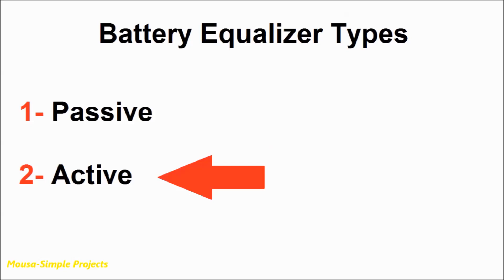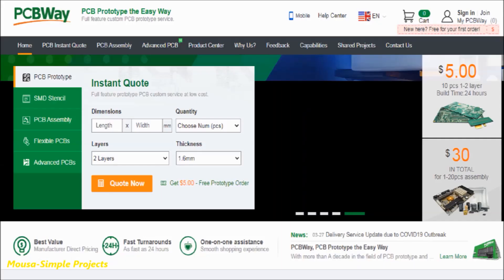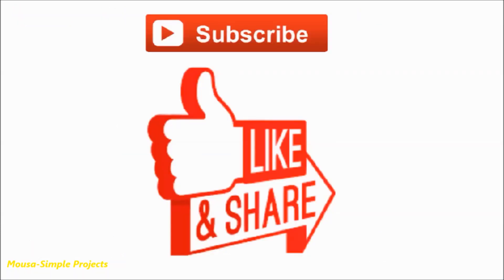The active type battery equalizer has higher efficiency; maybe I can make it for another video. I did some changes on this PCB and you can order it from PCBway.com. Please like this video and subscribe to my channel. Thanks for watching.